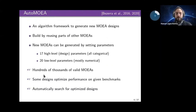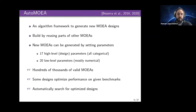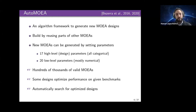Auto-MOEA is not an algorithm itself — it's more a framework for generating new MOEAs, built by taking parts from other MOEAs and allowing these parts to be recombined in ways that were never tried before. The framework has 17 high-level categorical parameters that control the design, and 20 low-level mostly numerical parameters. This allows us to generate in principle hundreds of thousands of valid MOEAs, some of which can optimize performance for particular benchmarks.